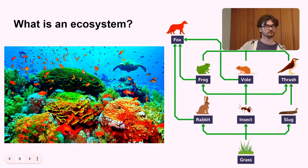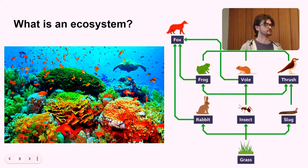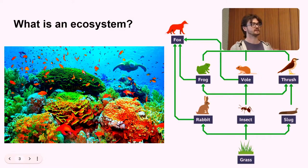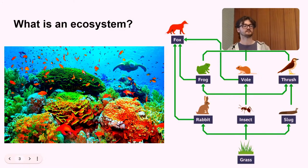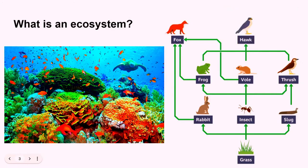Then the second level, we have the primary consumers. So in this case, a rabbit, insect and a slug, these eat the primary producers. The next level up, we have the secondary consumers. So these eat the primary consumers. And at the top level, we have the tertiary consumers or apex predators. And these basically hunt everything else. As an adult, they are not predated by anything.